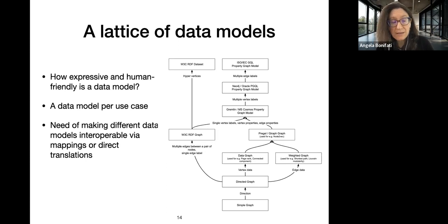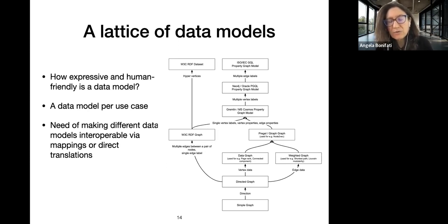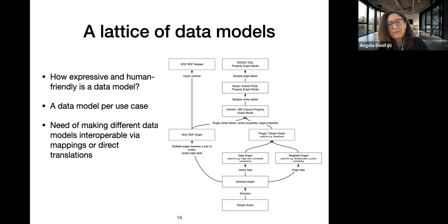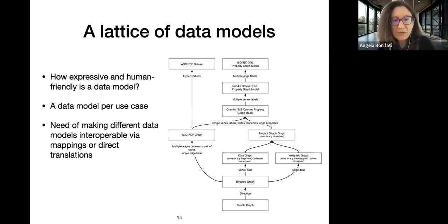If you add multiple labels on edges you obtain the standard property graph data model, which is about to be formally defined. A data model is often chosen per application or use case, but in any case we need different data models to be interoperable via direct translations or mappings. This is an important challenge for the future, since new graph data models can be designed, and the lattice lets us study their expressiveness and understandability.